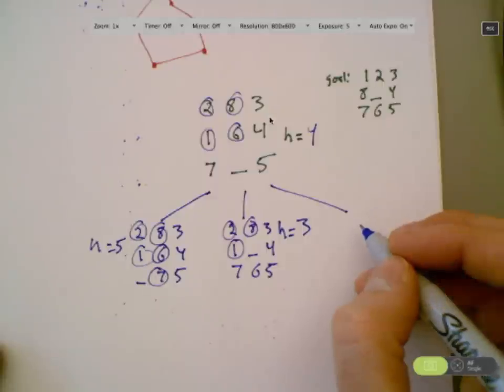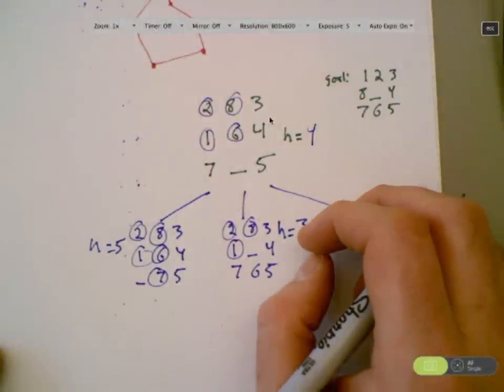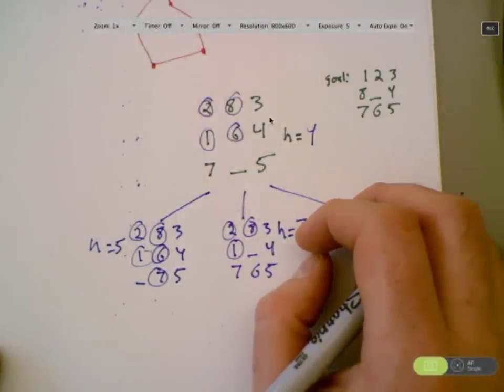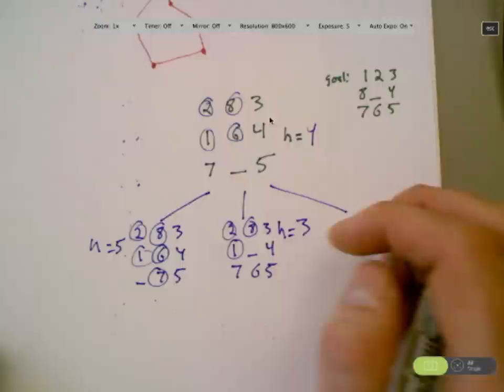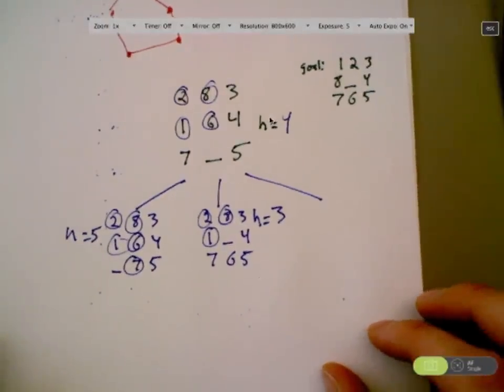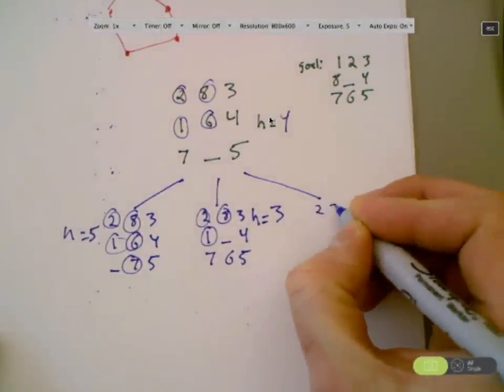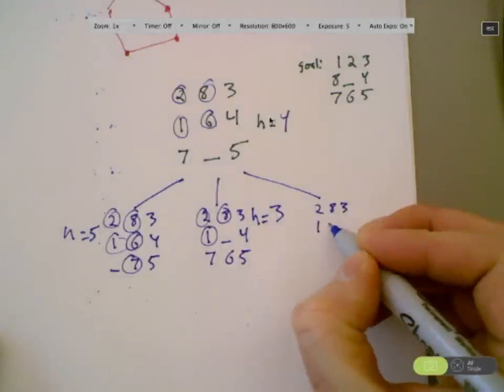All right. And what about the end here? Who's been quiet? Priya, is that your name? Priya, I'm sorry. Priya, tell me what is the third child here. 2, 8, 3. 2, 8, 3. 2, 8, 3. 1, 6, 4. 1, 6, 4.